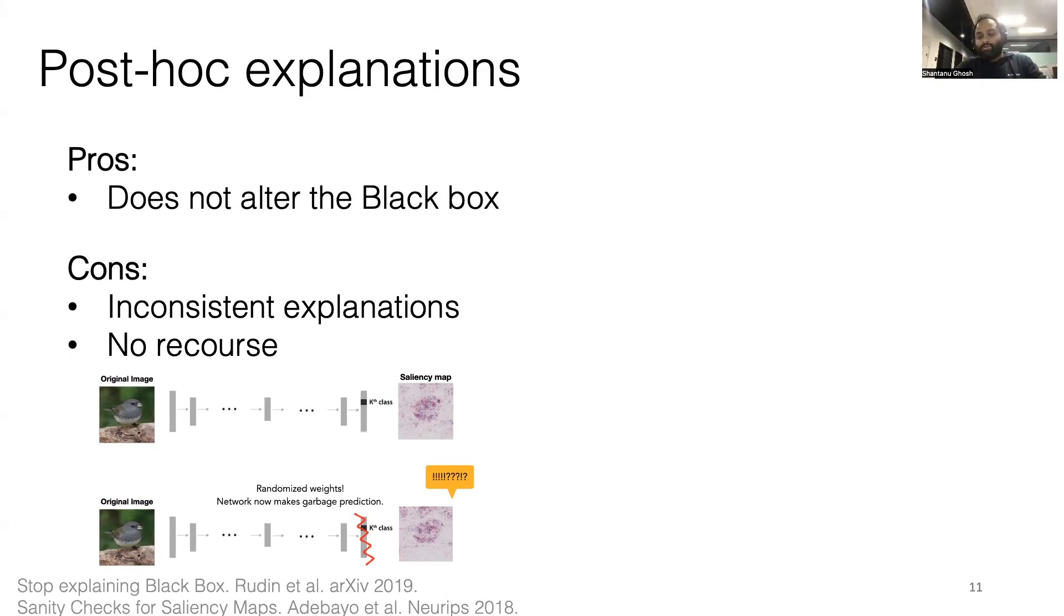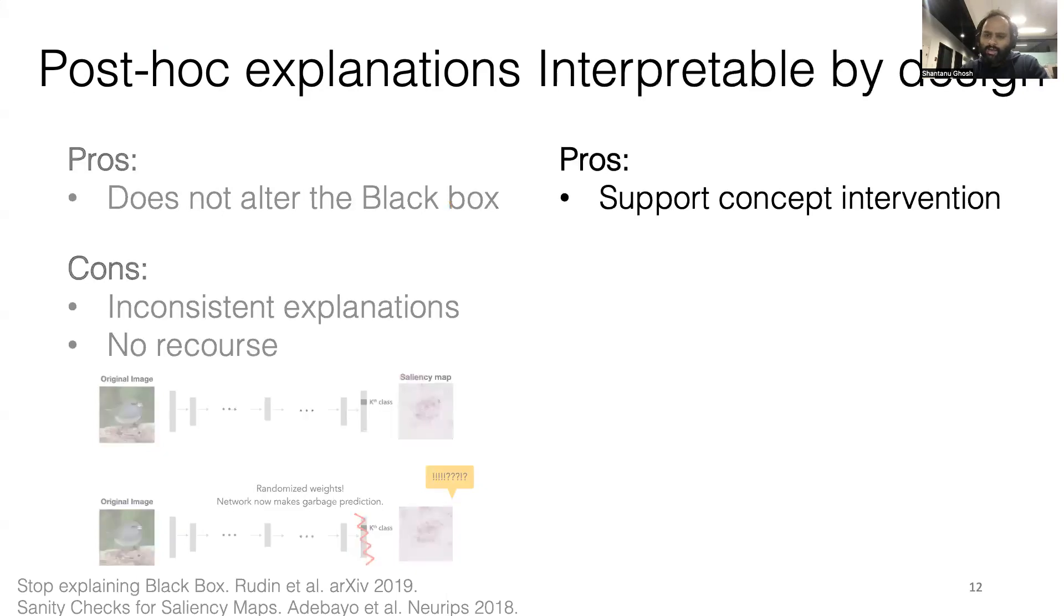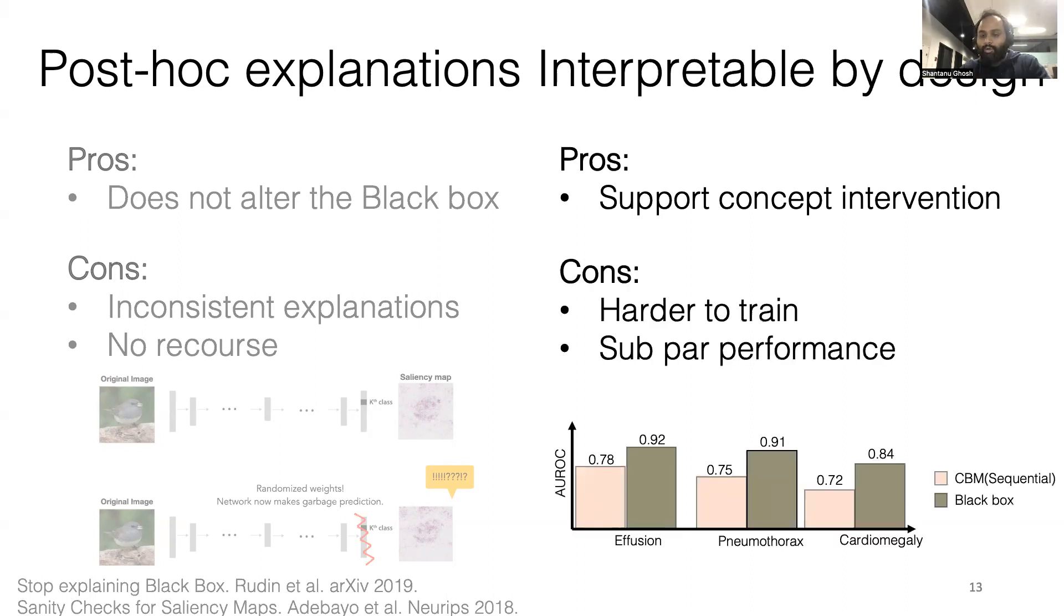We cannot fix the black box in case of a misclassification, so algorithmic recourse is not directly possible. On the other hand, concept-based interpretable by design methods support concept-level intervention to fix a model's prediction. However, they require substantial machine learning expertise to design and optimize and achieve suboptimal performance compared to their black box design.